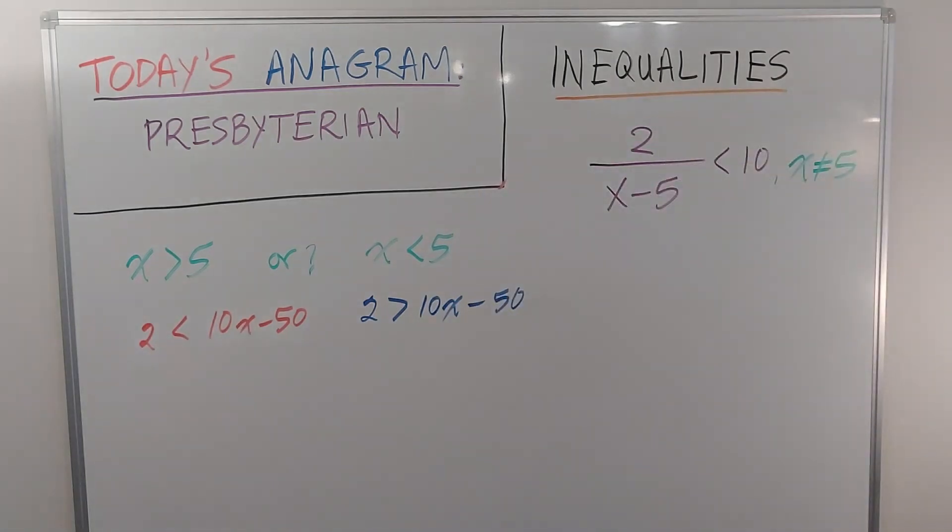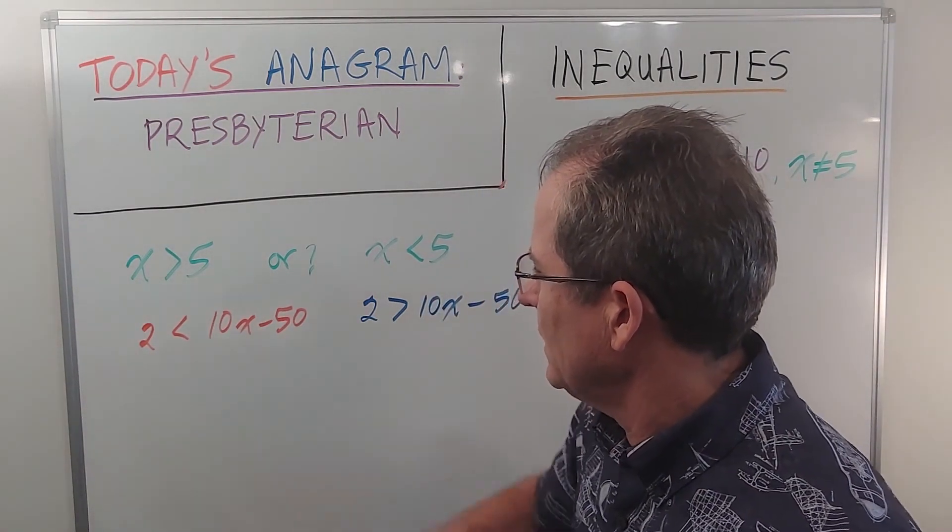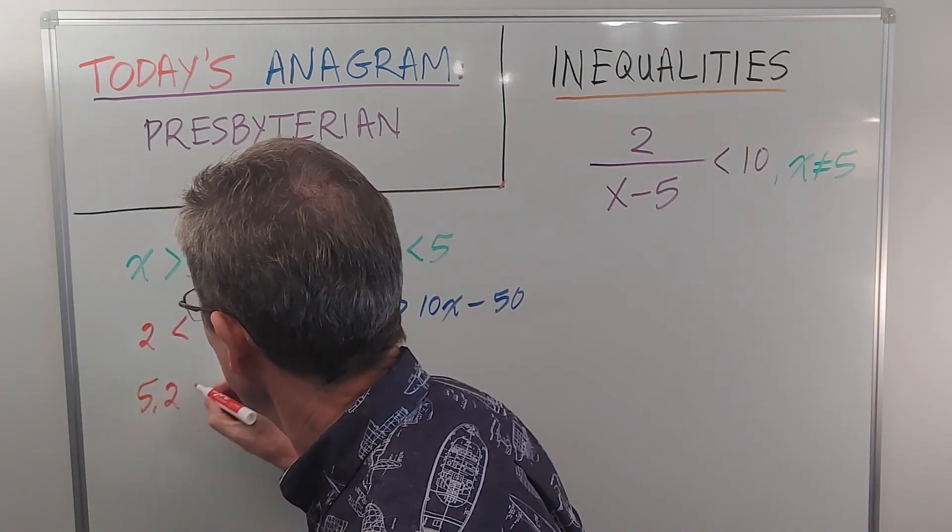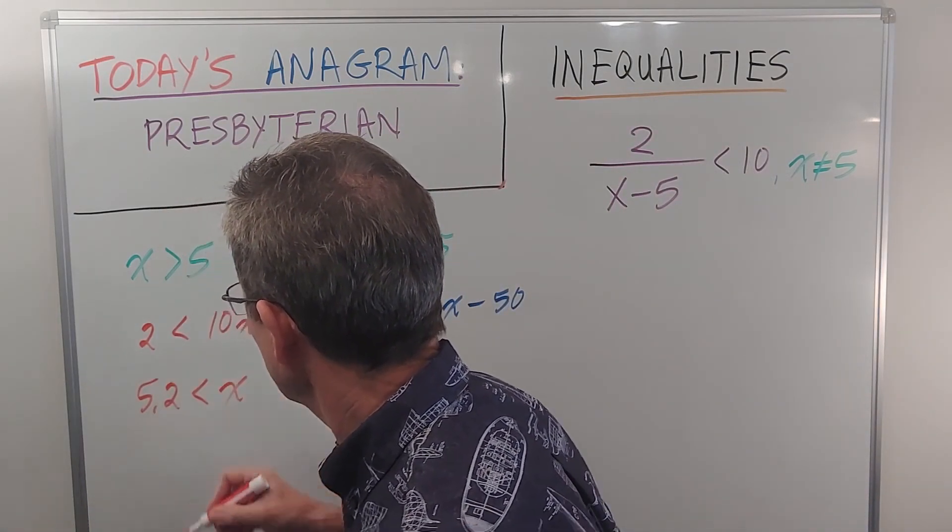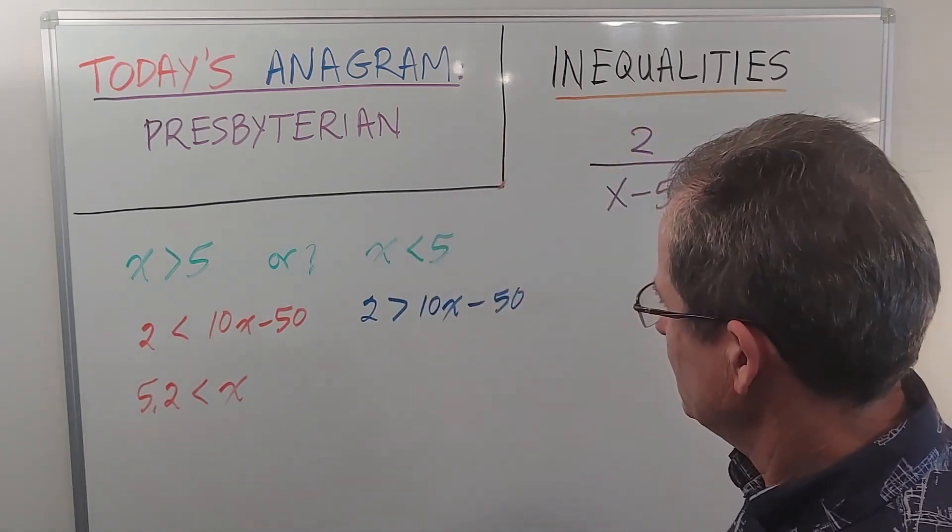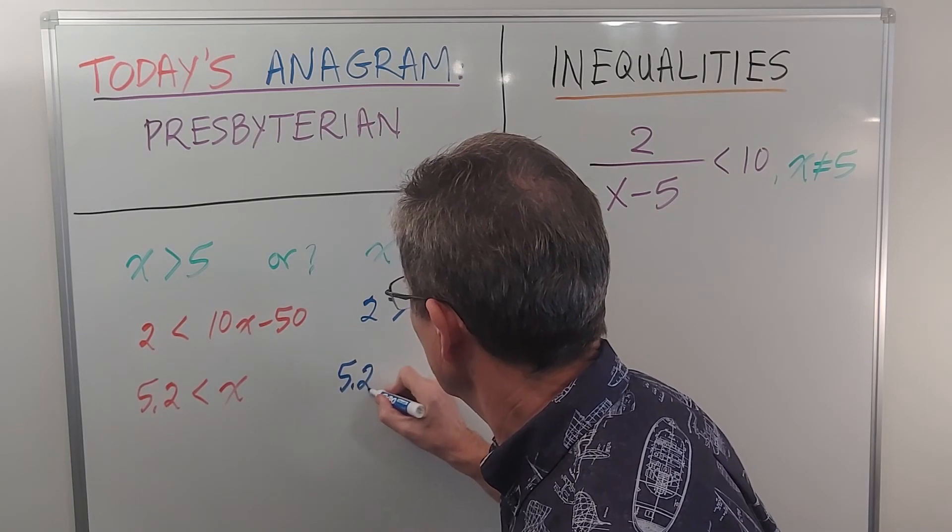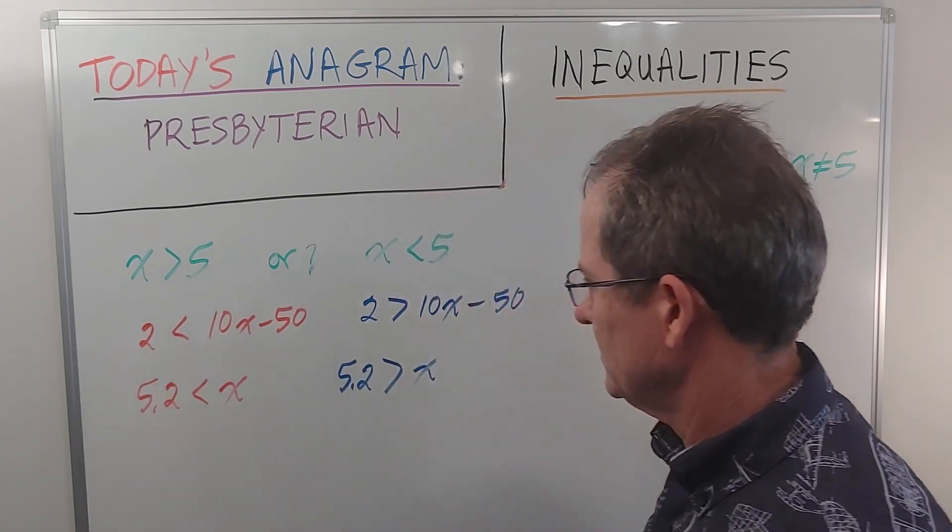So if I bring the negative 50 to the other side and divide by 10, I'm going to get 5.2, in this case, less than x. And if I do the same thing over here, I'm going to get 5.2 greater than x.